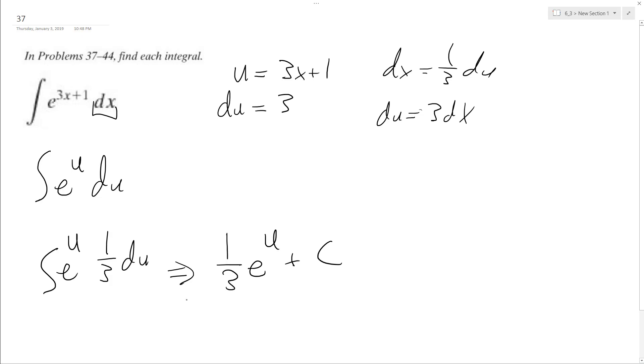And then we just sub back in what we had. So we'll have 1 third E raised to 3X plus 1 plus C. And that's it.